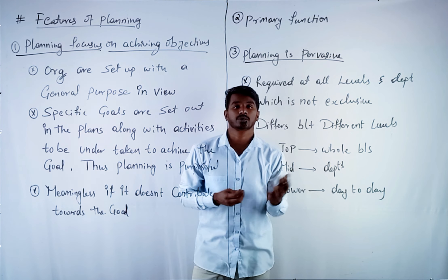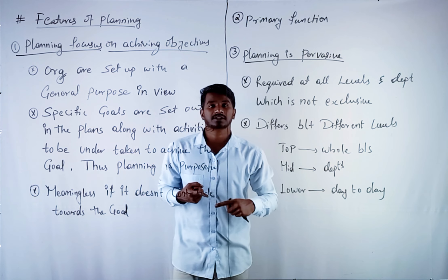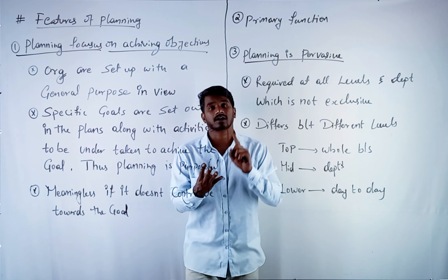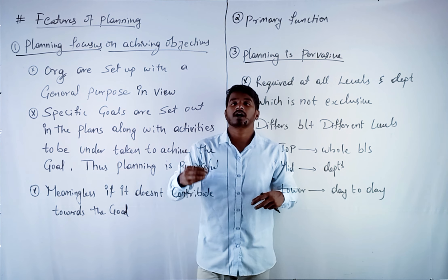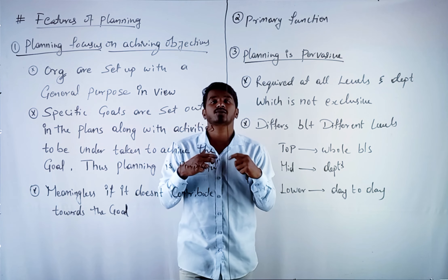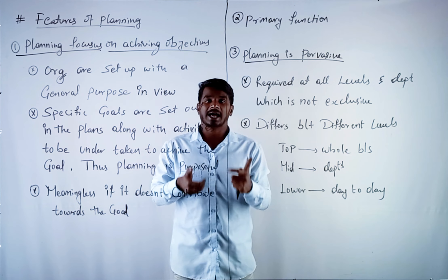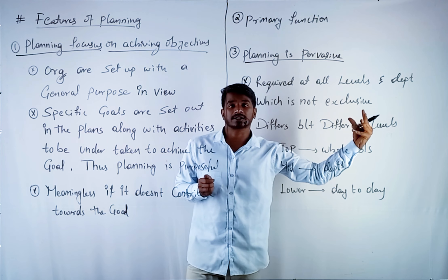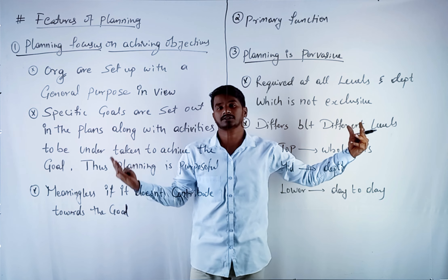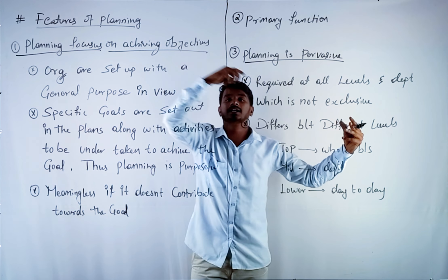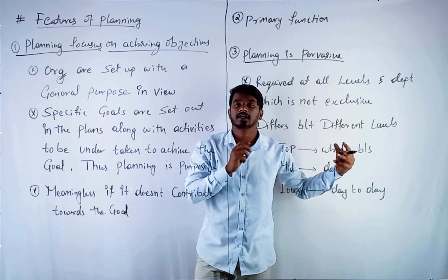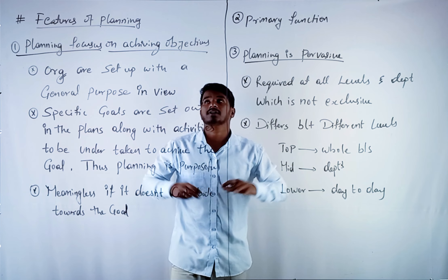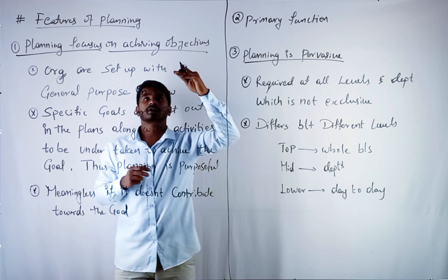For those objectives, you planned: from whom to purchase raw material, at what price and quality, how many employees will work on the task, how to sell, and at what price to sell. So to achieve the main objective — to earn profit, create a brand, or reach a larger audience — the planning is working towards that. We are working through a plan to achieve the objectives of the organization. So planning focuses on achieving objectives.